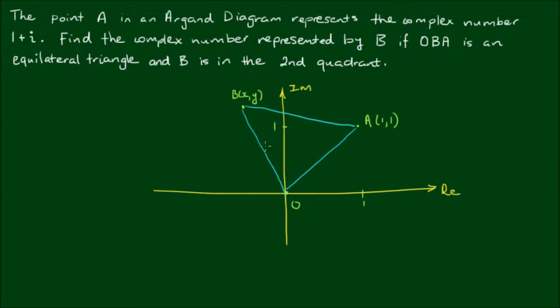So by definition, an equilateral triangle has three equal sides and three equal angles. And of course, the angles have to equal 60 degrees. So how do we use this knowledge to find the coordinates of point B?